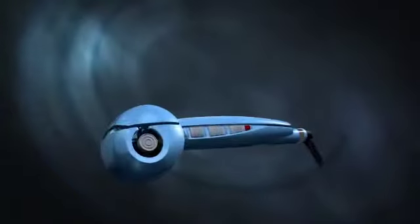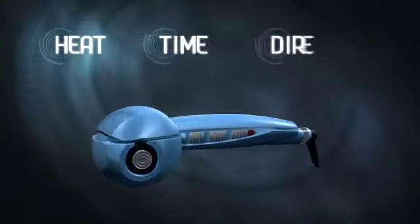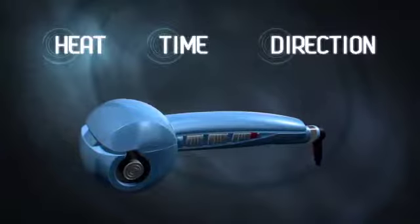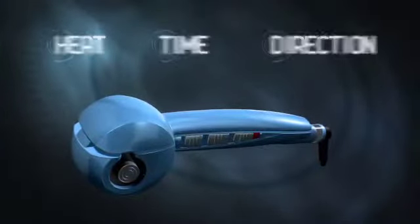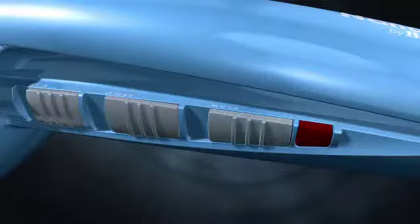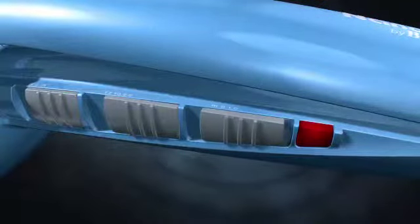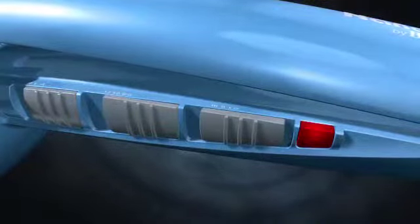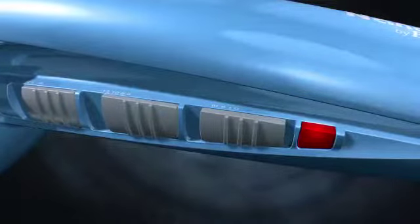Three functions—heat, time, and curl direction—adjust for different hair types and let you create different kinds of curls. Turn on the Miracurl using the switch next to the temperature indicator light. The light will blink as the unit heats up. When the light glows steadily, you're ready to go.